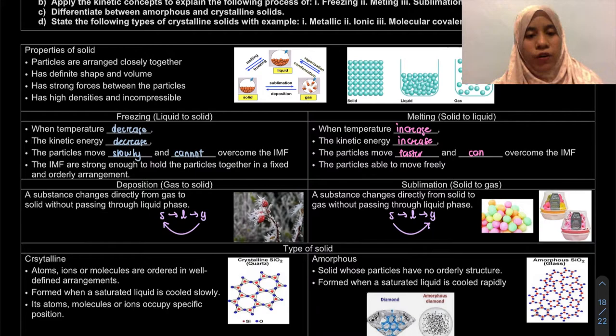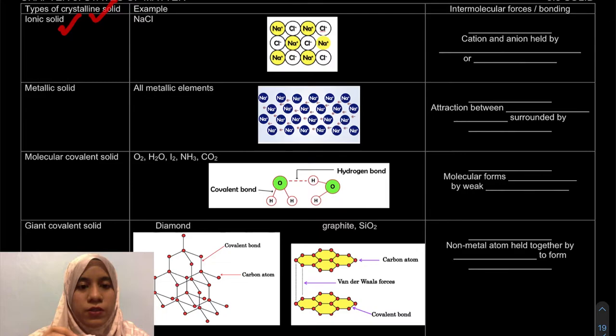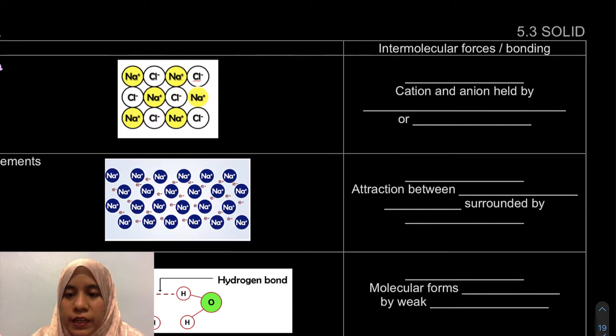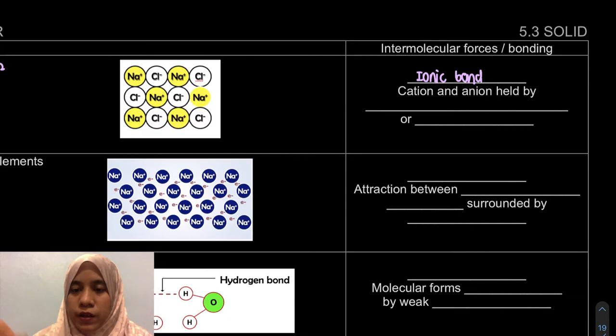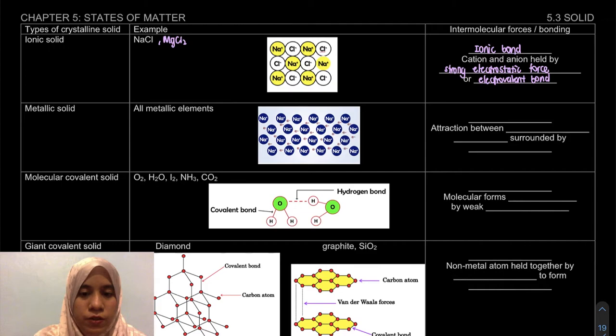Next we're going to look at examples of crystalline solid. We include what we learned in chapter 4. The first type of crystalline solid is ionic solid. Examples are NaCl, MgCl2, and many others, but make sure it is ionic. What is the intermolecular forces or bonding? It's actually ionic bond. Ionic bond we need to explain. Ionic bond is actually cation and anion held by strong electrostatic force. Sometimes it will also be called electrovalent bond. That's the first one.